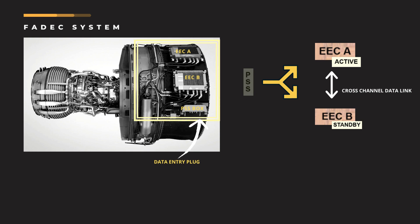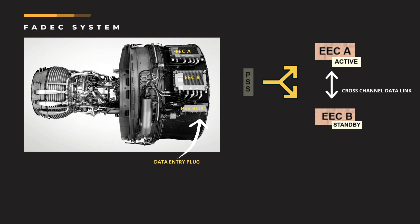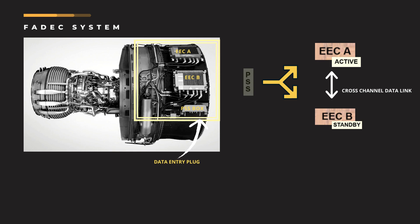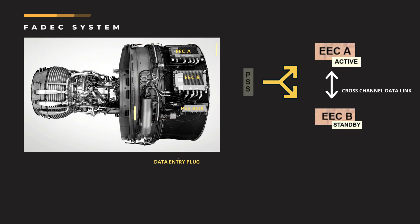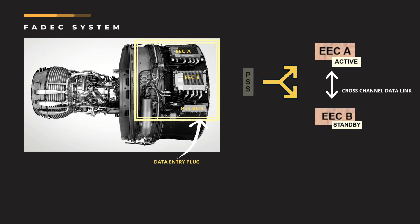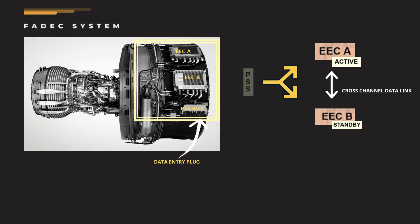The other EEC will be in standby or inactive mode. The EEC in control switches during engine start if equally healthy. The PSS receives engine air pressure measurements and converts them into electrical signals to both EECs for engine control and monitoring. The data entry plug attached to the engine is connected to the PSS and data will be communicated to the EECs.